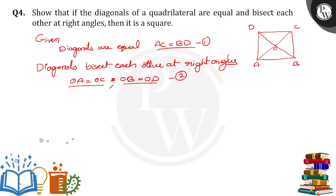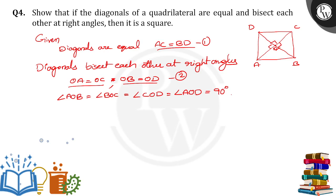Not only that — diagonals bisect each other at right angles. Right angle means all angles are 90 degrees here. So angle AOB is equal to angle BOC is equal to angle COD is equal to angle AOD, and all are equal to 90 degrees each. Take it as equation number 3. This is the given data from the figure.